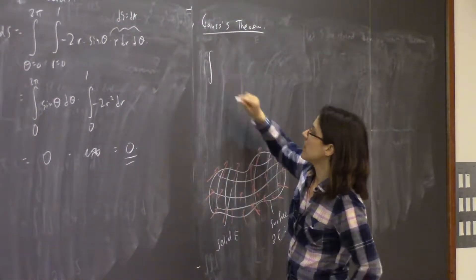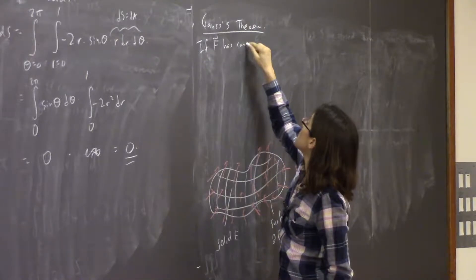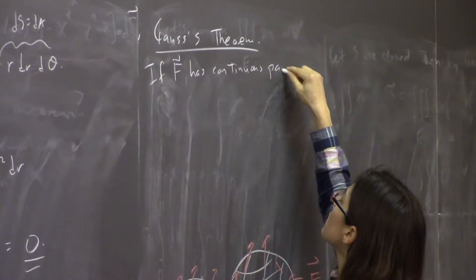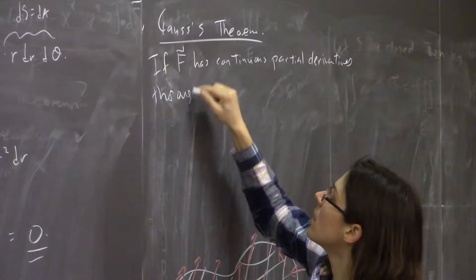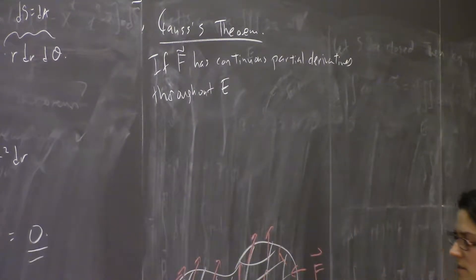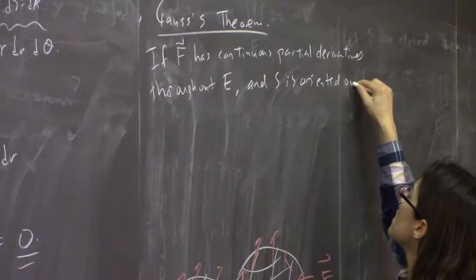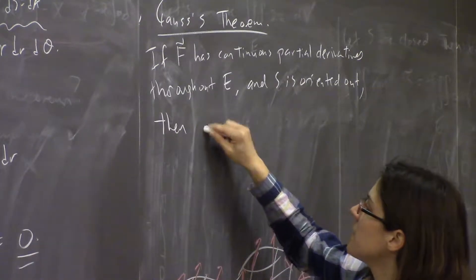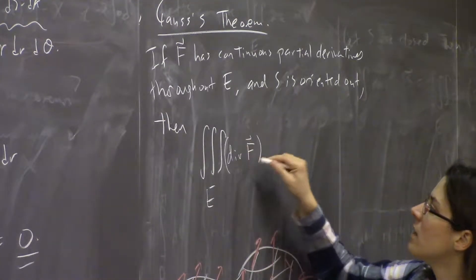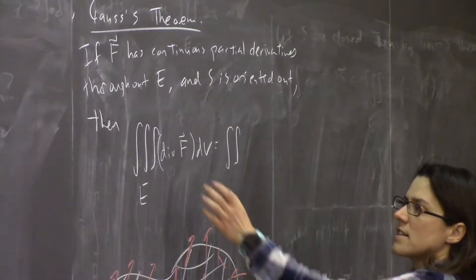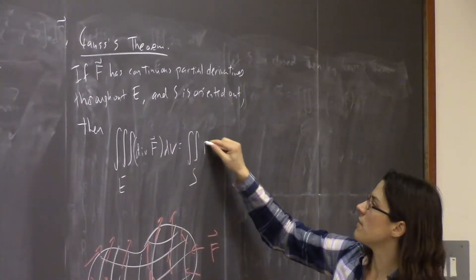Gauss's theorem says: if your vector field F has continuous partial derivatives throughout the solid region E — which includes its boundary surface S — and S is oriented outward, then the triple integral over E of the divergence of F dV equals the double integral over the surface S (the boundary of E) of F · dS.